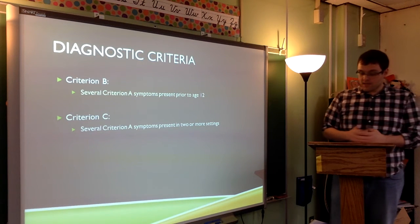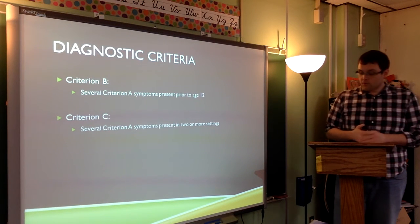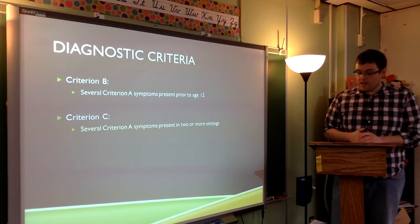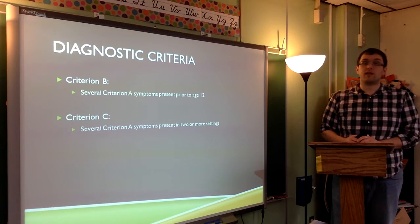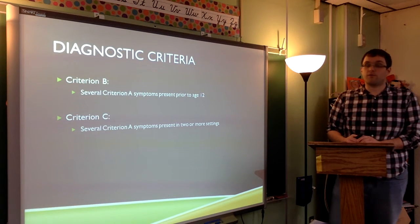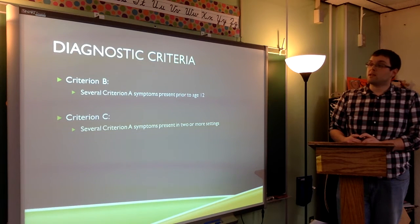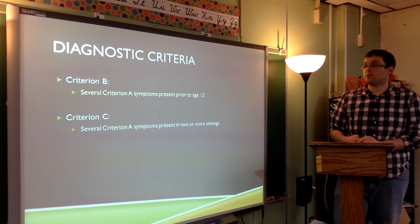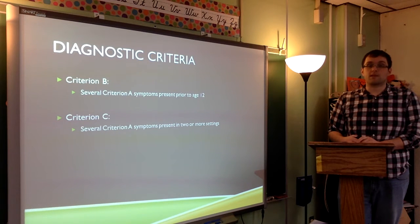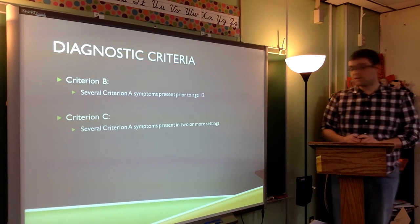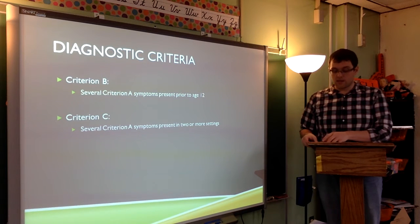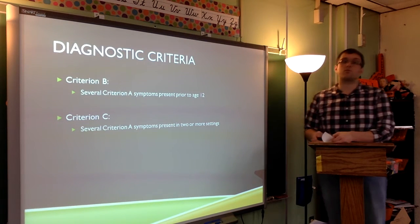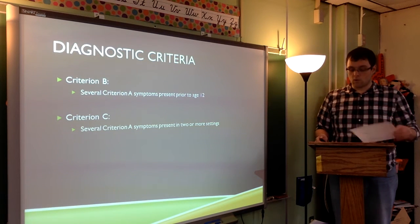Criterion B states that several Criterion A symptoms have to be present prior to the age of 12. Criterion C requires that several Criterion A symptoms have to be present in two or more settings — so it can't just be at home; it has to be present in other settings as well, like school or in public.